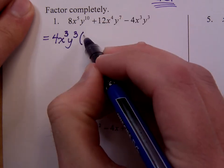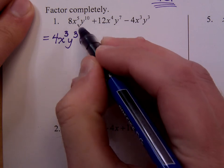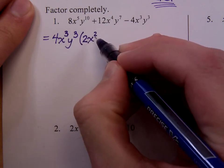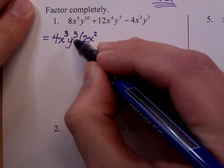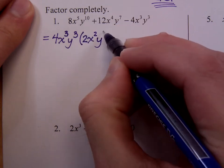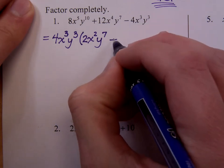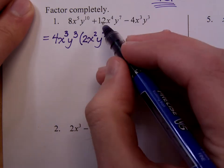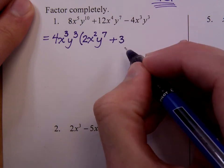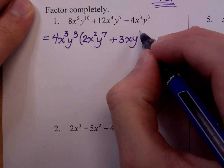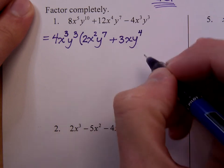Of course, if I have 8, 8 is made up of 4 times 2. x to the 5th is made up of x to the 3rd and x squared. And I have 10 factors of y. I take out 3. That leaves me with 7. And I proceed on to the next term. 12 divided by 4 is 3. I have 1 factor of x and I would have 4 factors of y.